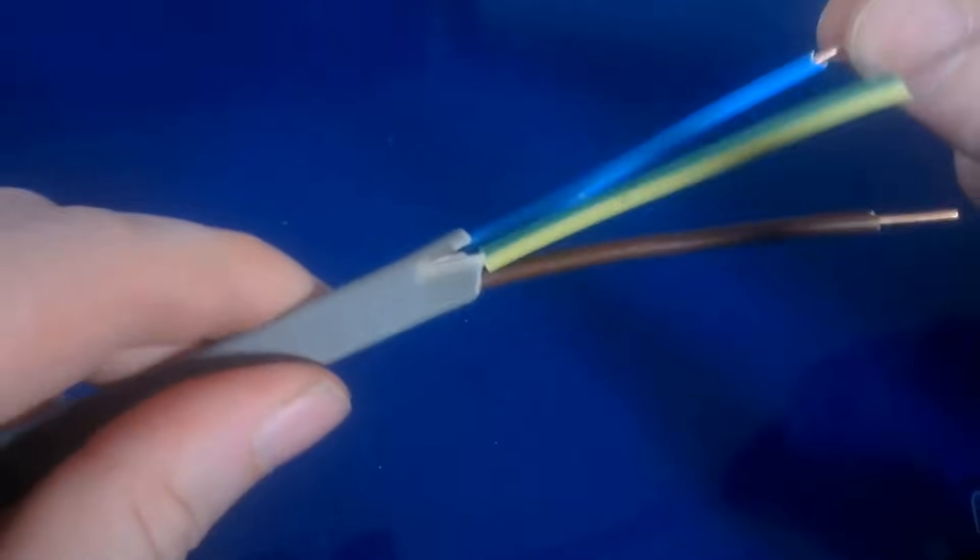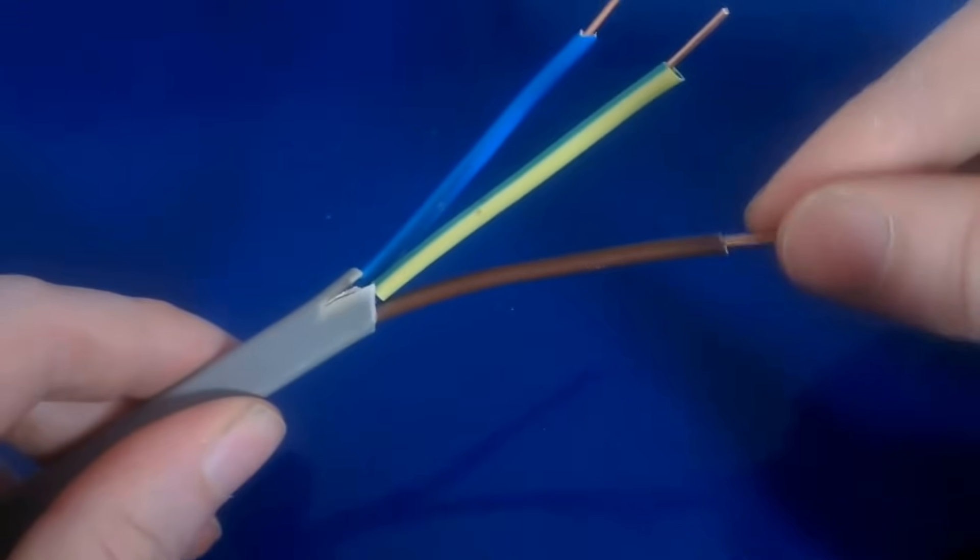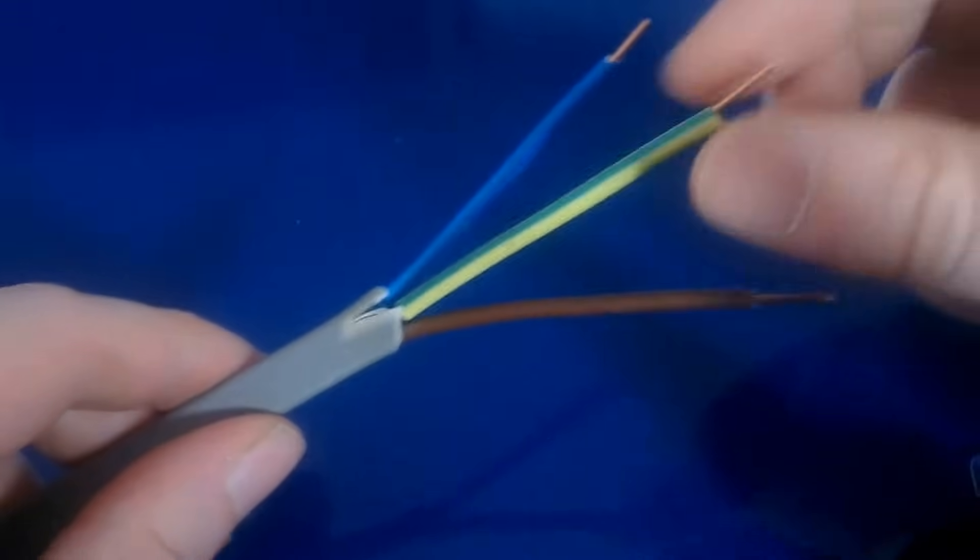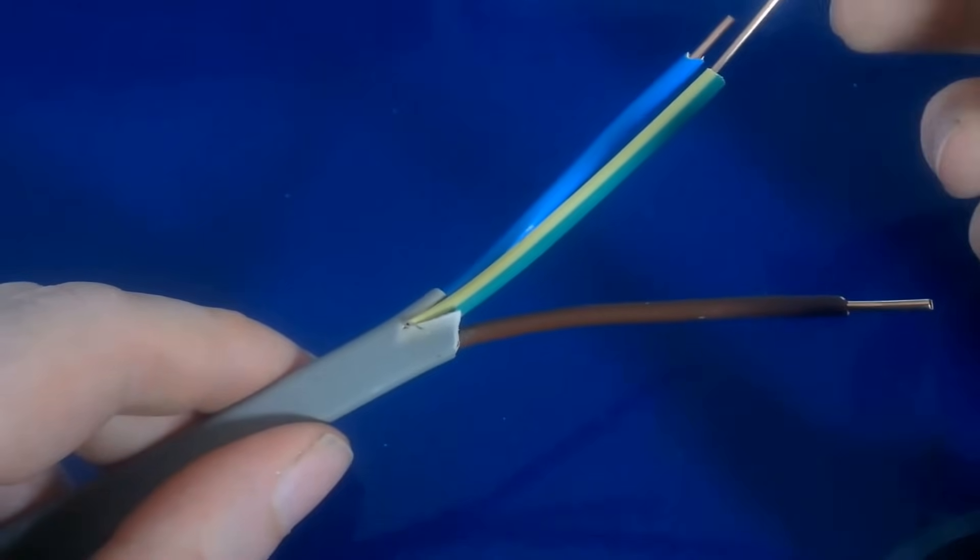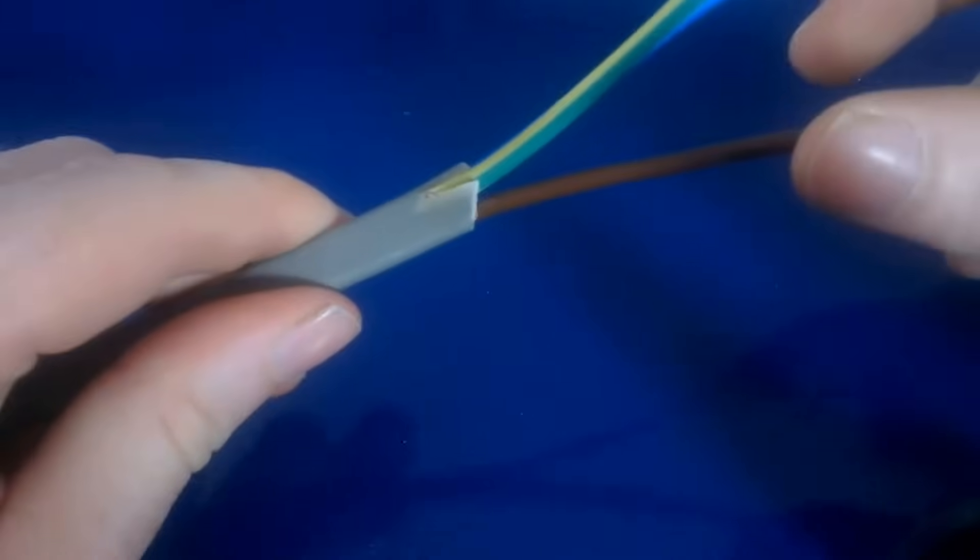So you've got your blue which is your neutral, your brown which is your live, and you've got your bare wire sleeved green and yellow which is your earth cable. And that's pretty much it.